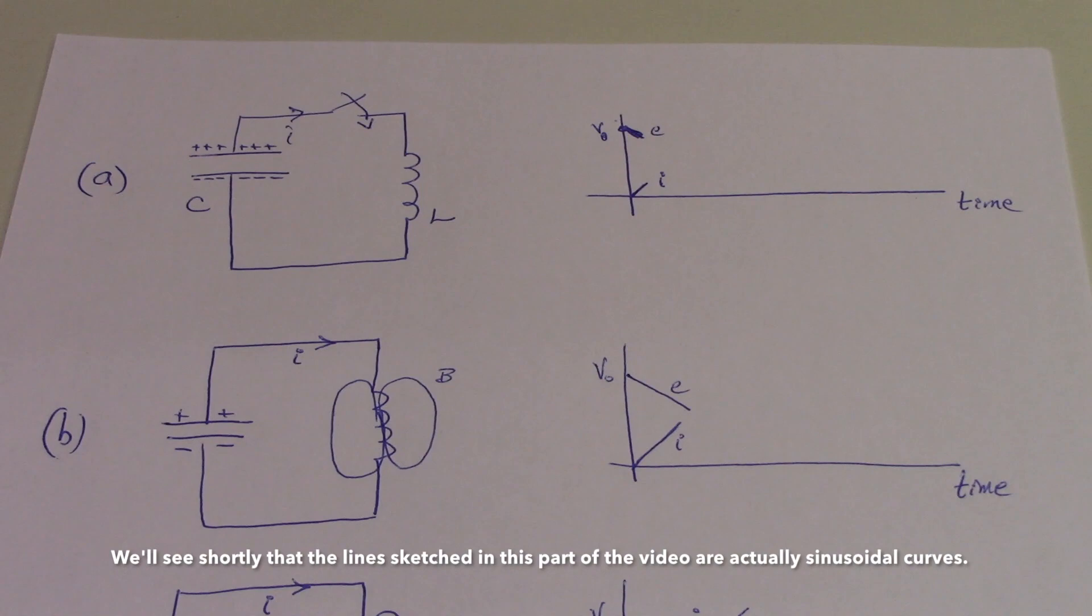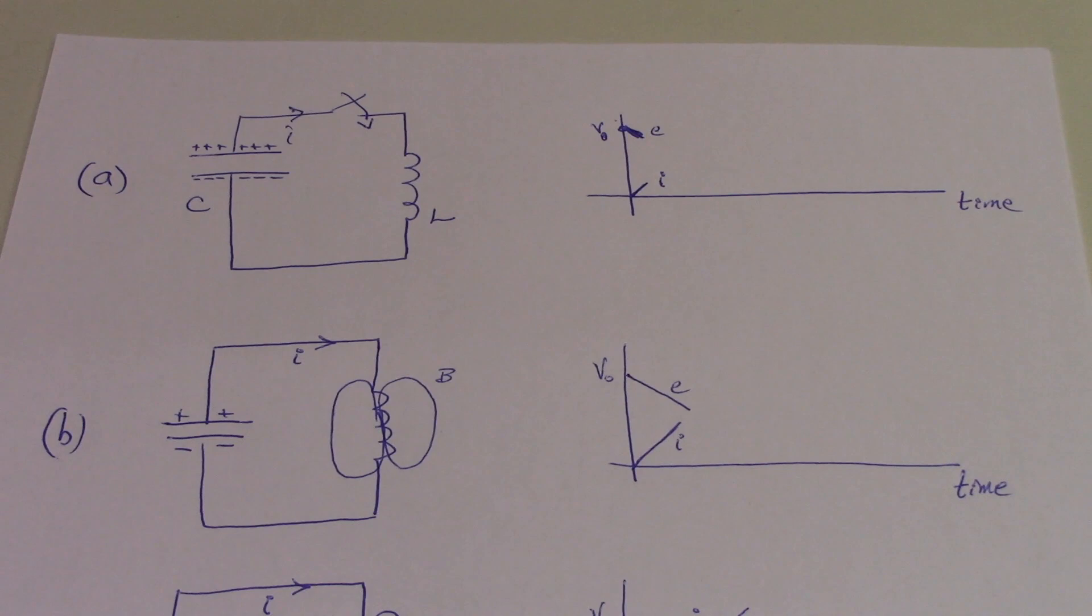So in drawing A, we see that immediately when the switch is closed, charges begin to leave the capacitor, resulting in a current. The current initially is very small, and we see that the voltage across the capacitor begins to decrease.